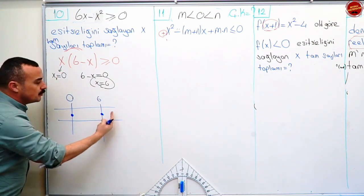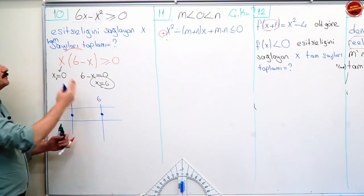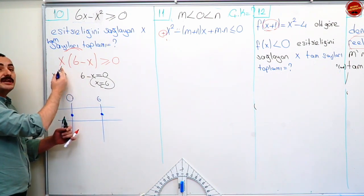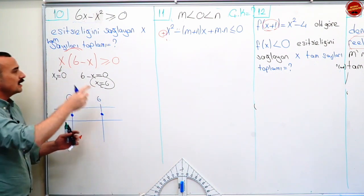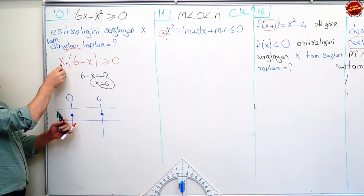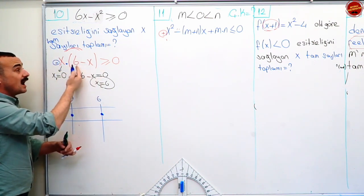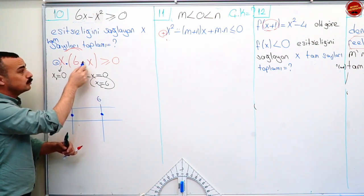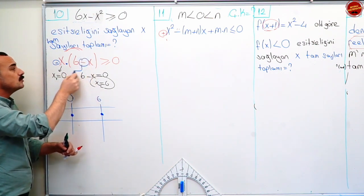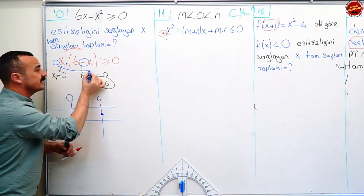Şimdi geldik en büyük dereceli terimin işaretini belirlemeye. Çarpanlarına ayrılmış şeklinde işaret belirleyeceksen bunu unutma. Bak ilk çarpanım x, bunun işareti artı. İkinci çarpanım altı eksi x, bunun en büyük dereceli olanı x, işareti eksi. Bununla bunun işaretlerini çarpacaksın. Sonuç eksi.